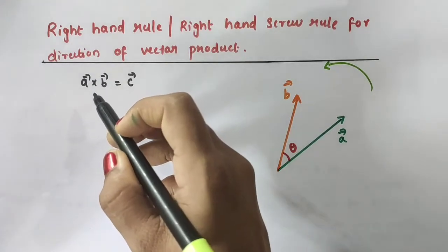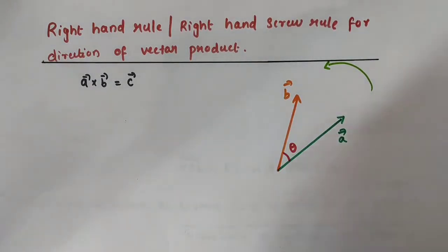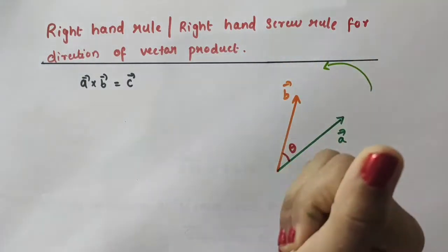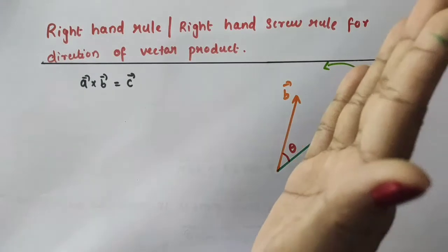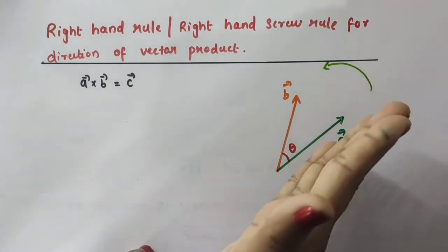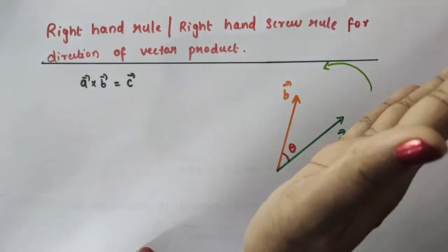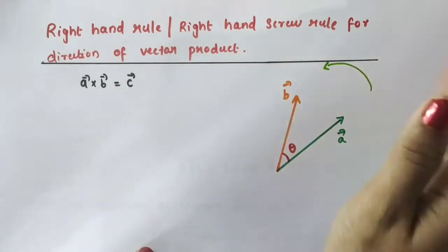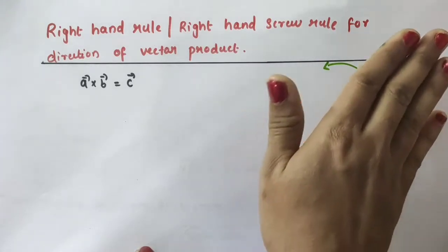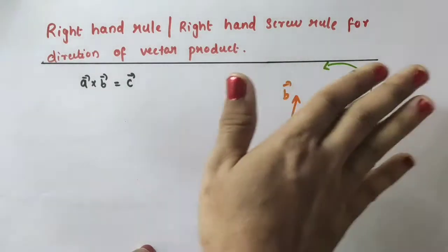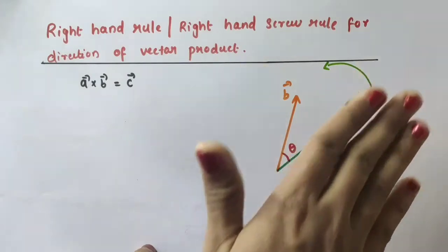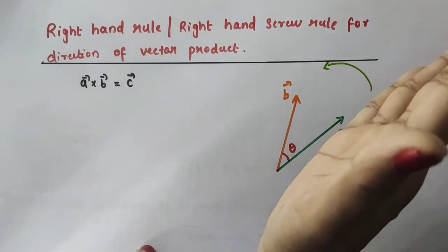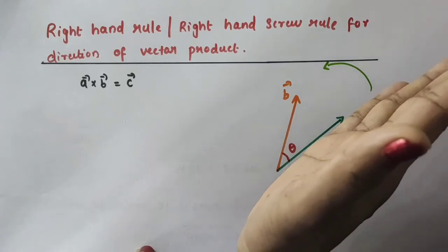To apply this rule to get the direction of vector C, we use our right hand. Open up the right hand palm and place it along vector A. We should not place our palm parallel to the plane containing vector A and vector B. Instead, place the right hand palm perpendicular to vector A — perpendicular to the plane containing vector A.